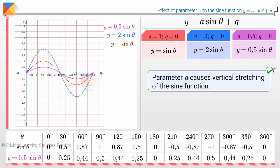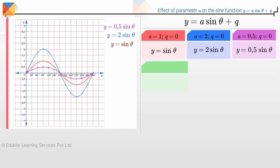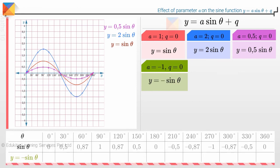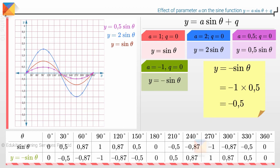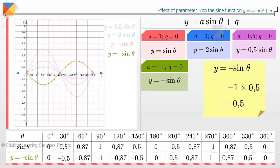Remember that we took only positive values of a in this investigation. What if a is negative? If we take a equals minus 1 and q equals 0, then the function becomes y equals minus sine theta. To calculate the y-values when a equals minus 1, simply multiply all the values of y equals sine theta by minus 1. For example, at theta equals 0 degrees, y equals minus 1 times 0 equals 0; at theta equals 30 degrees, y equals minus 1 times 0.5 equals minus 0.5. The other values are found in a similar way. We then plot the points and join them with a smooth curve. Notice that the graph is a reflection of the graph of y equals sine theta over the x-axis.